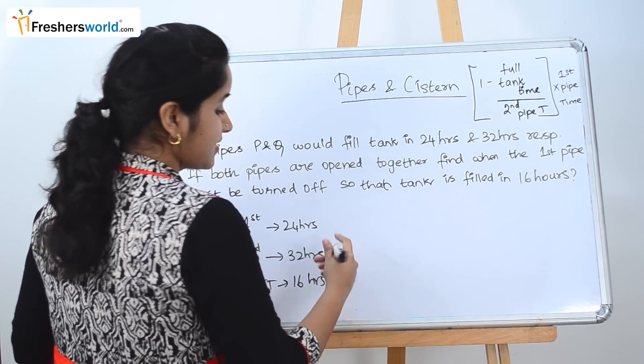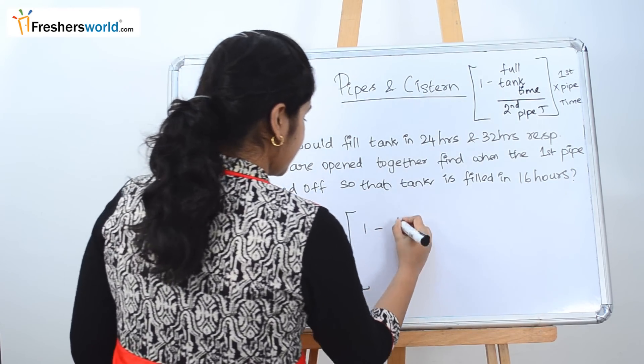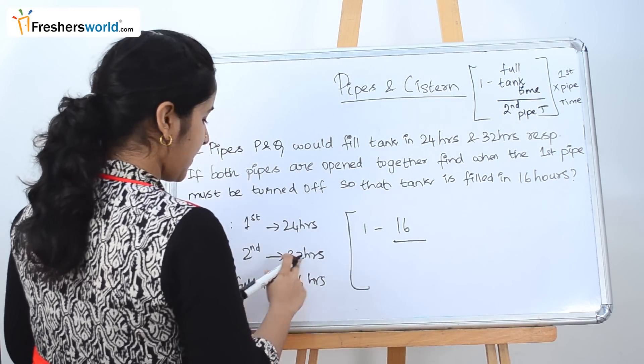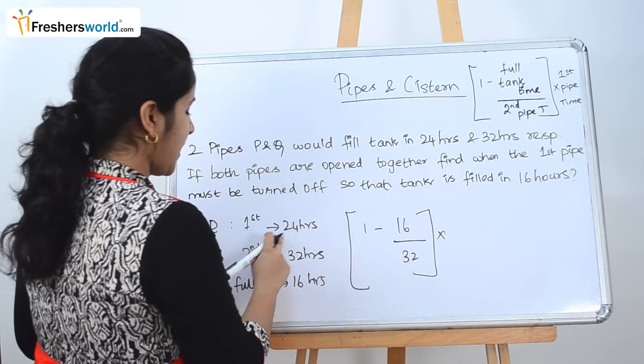So let's now substitute it in the formula. So 1 minus full tank time is 16 divided by second pipe time is 32 into first pipe time is 24.